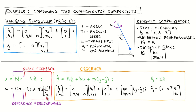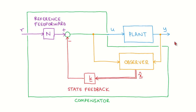Let's now draw a block diagram of the complete system from these equations. The plant is shown in blue. We know the plant's input and output, but we don't know the states. The task of the observer, shown in orange, is to take the plant's input and output and estimate the states X hat. The estimated states are fed back via the state feedback gain to form one part of the control law, and the reference input is multiplied with the reference feed forward gain to form the other part. The observer, state feedback, and reference feed forward form the compensator.